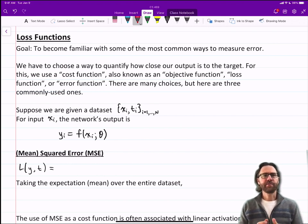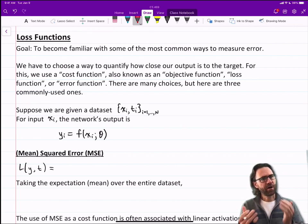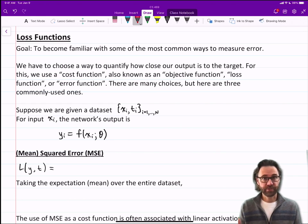Okay, so today we're going to talk about loss functions. The goal here is to become familiar with some of the most common ways to measure error. We have to choose a way to quantify how close our output is to the target. For this we use a cost function, which is also often called an objective function, loss function, or error function. I will use those terms interchangeably. There are many choices, but here I'm going to talk about three main choices.